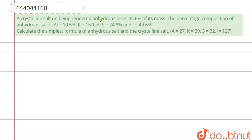A crystalline salt on being rendered anhydrous loses 45.6 grams of its mass. The percentage composition of the anhydrous salt is: aluminium 10.5%, potassium 15.1%, sulfur 24.8%, and iodine 49.6%. Calculate the simplest formula of the anhydrous salt and the crystalline salt.